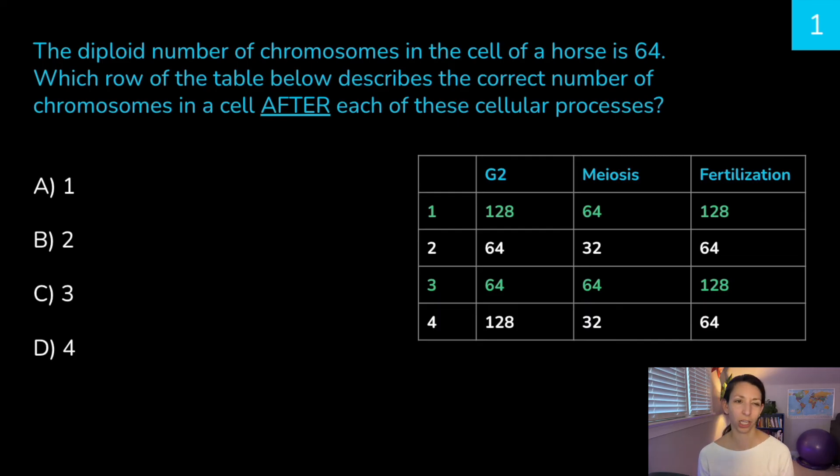All right, starting off a little tricky here. The diploid number of chromosomes in the cell of a horse is 64. Which row of the table below describes the correct number of chromosomes in a cell after each of these cellular processes? So we have after G2, after meiosis, and after fertilization. Remember, a diploid cell, a normal body cell, has 64. All right, I want you to think about it. Remember, you can pause me or mute me and go through these at your own pace. I'm going to give you a minute to think or pause and then we'll give away the answer.